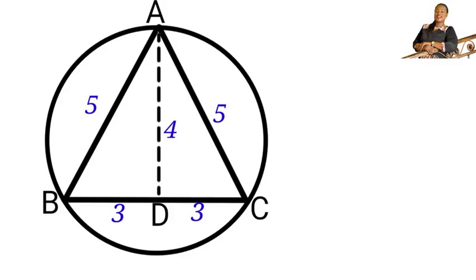Next we have to extend AD to touch the circle. Let us call this point E. Remember that AD divides BC into two equal segments, so the perpendicular line passes through the center of the circle. So here is the center, let's call it O.